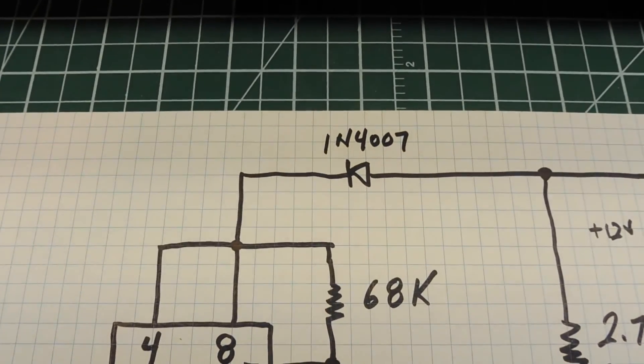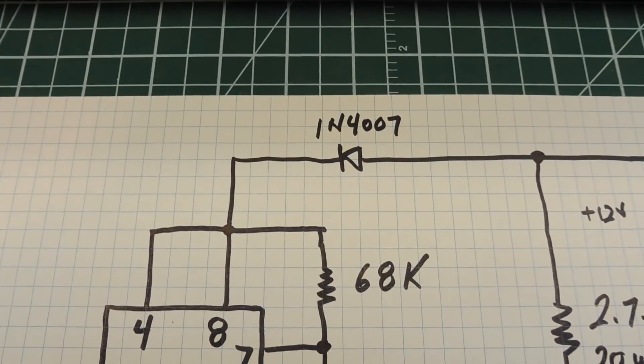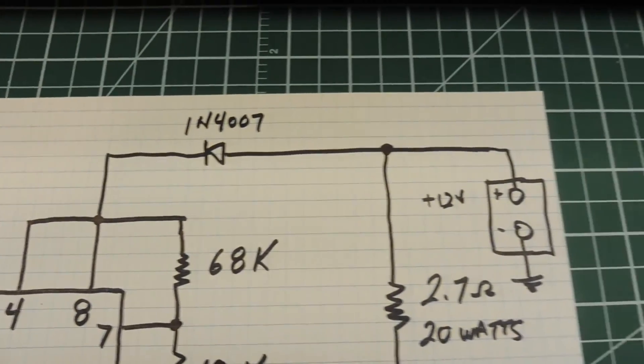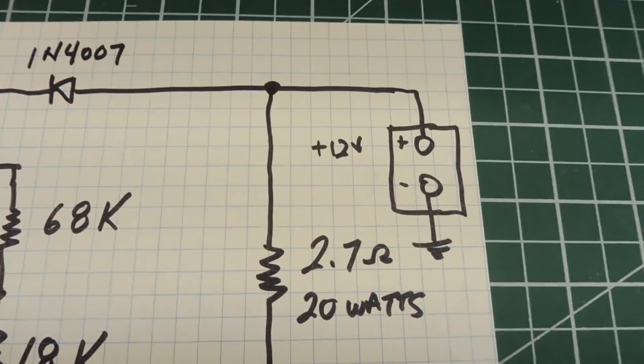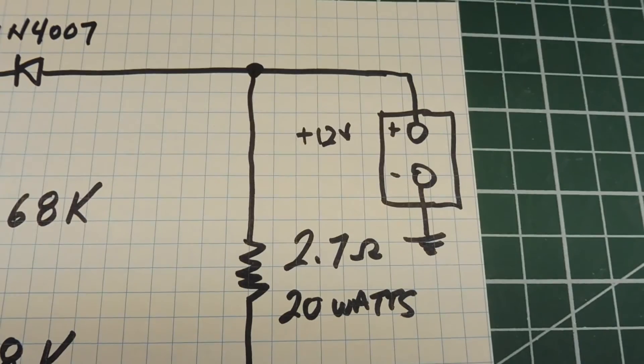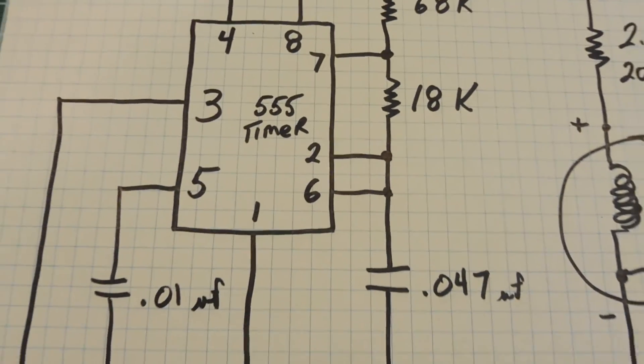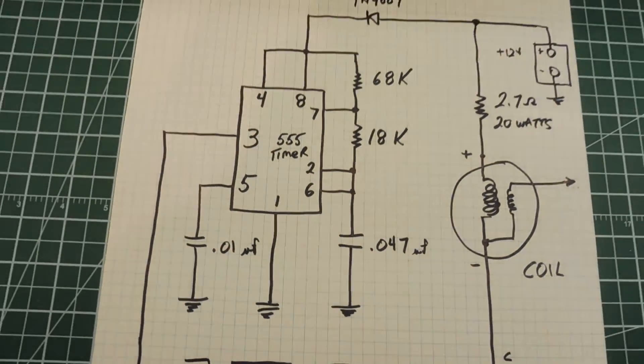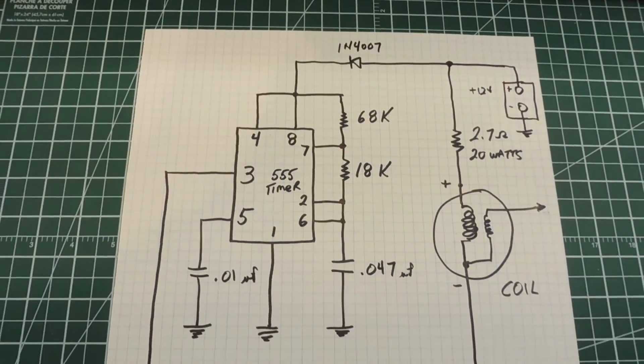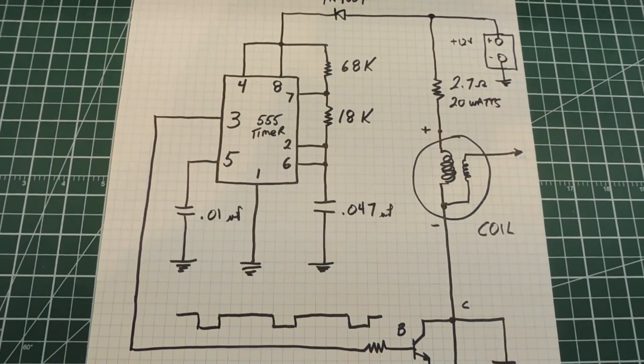The diode up there, the 1N4007, is just a reverse polarity protection in case you cross the wires on the battery. When you hook this thing up to the battery, it will protect the circuit. So that's basically the circuit for the engine ignition simulator.